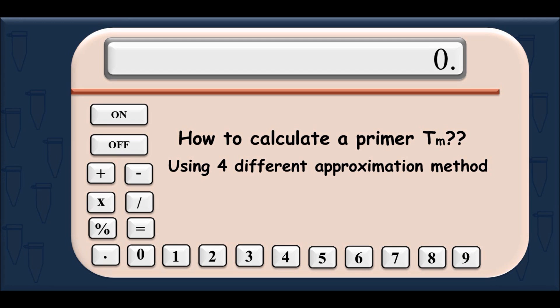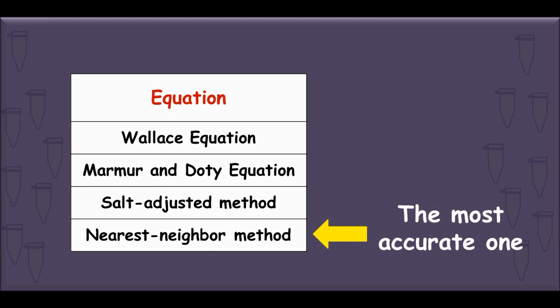The primer melting temperature can be calculated using different methods: the Wallace equation, the Marmor and Doty equation, the salt-adjusted method, and the nearest neighbor method, which is the most accurate one.